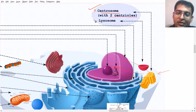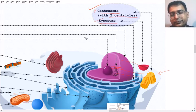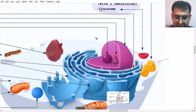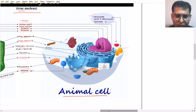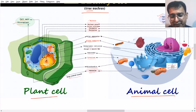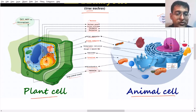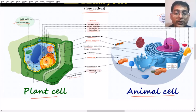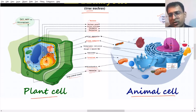Lysosomes are present in animal cells but not in plant cells. So to summarize: centrosome and lysosome are present only in animal cells, while cell wall and chloroplast are present only in plant cells. Vacuoles are present in both, but in plant cells they can cover almost 90% of the cell, whereas in animal cells vacuoles are very small or may not be present at all.